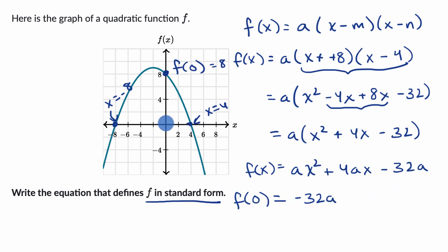But we also know when x equals zero, f of zero is eight. We see that from the graph, so this equals eight. And so we could use this to solve for a. Divide both sides by negative 32. And we get a equals eight over 32, which is the same thing as 1 over 4. So this is negative 1/4.